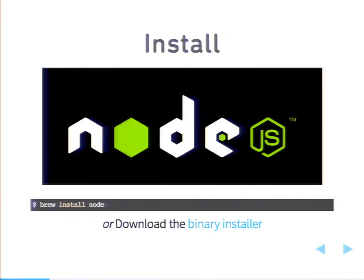Installing Node is extremely easy. If you use Homebrew, type in that line and it pretty much takes care of it. Or you can just download the binary. Node will run pretty much on anything. If you are working in Vagrant, it's super easy to install. If you're working on a Linux box, easy — it runs pretty much anywhere.